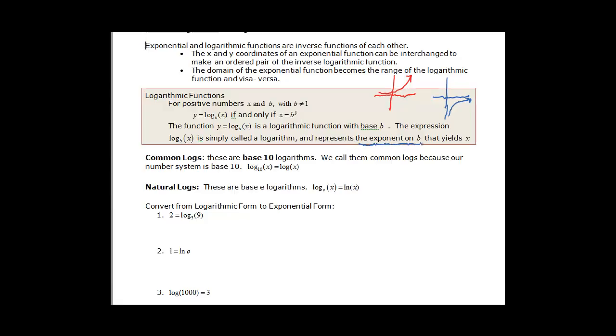It represents the exponent on b that gives us x. So we have a couple of logarithms that we can use in our calculator, and otherwise we're going to need some other way to work these things if there is another base. So common logs are base 10. That's what our number system is based on. Remember when you were younger in elementary school you learned to add your ones column and your tens column and your hundreds column and your thousands column. Because those are all 10 to the first, 10 to the second, 10 to the third. So those are all base 10.